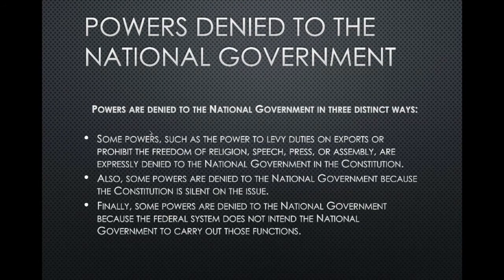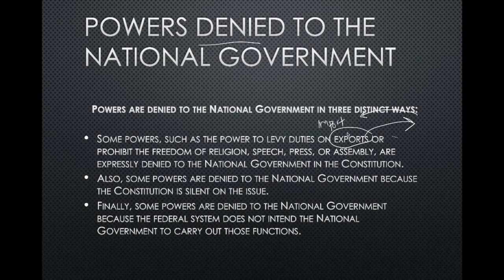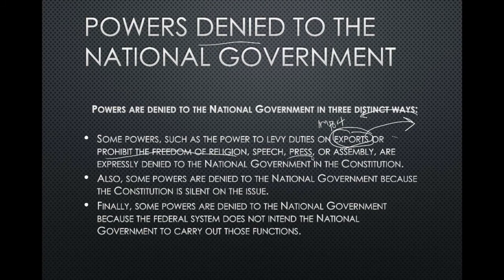The federal government can't do everything — certain powers are denied to them. For example, the federal government cannot tax exports — goods going outside of the country — because that would discourage other countries from buying American products. The Constitution also protects freedom of speech and freedom of the press, meaning the government cannot control what information reaches the people. The right to assemble and protest is protected as well — the government cannot prohibit those activities, though it can regulate them to ensure public safety.